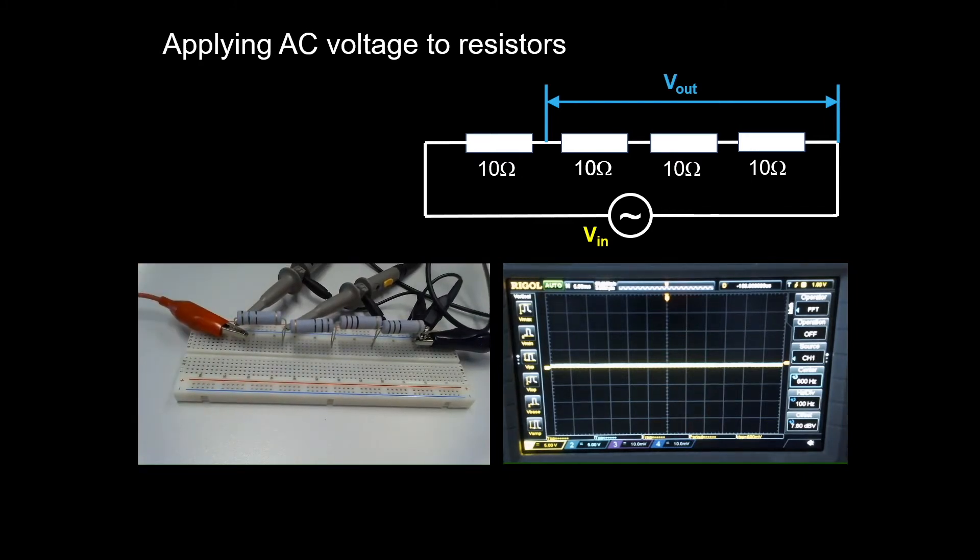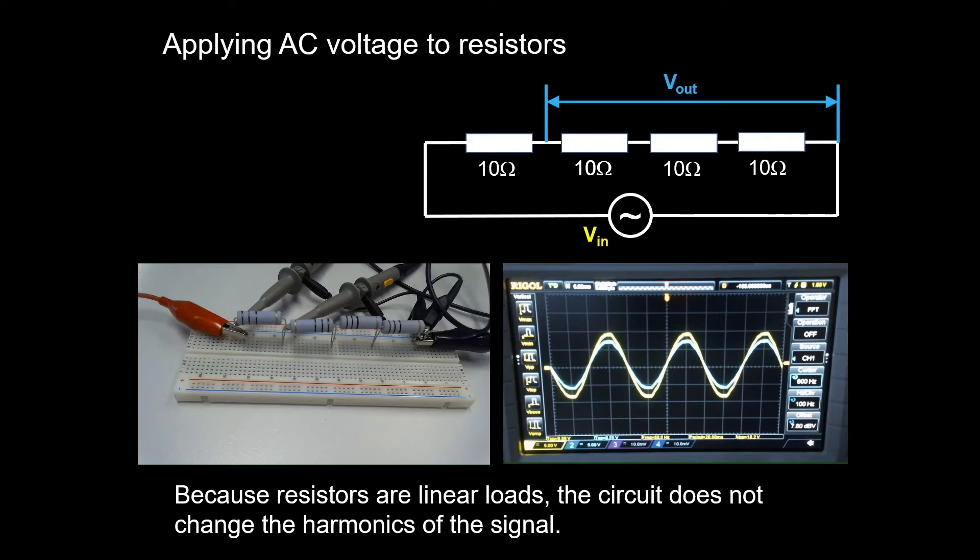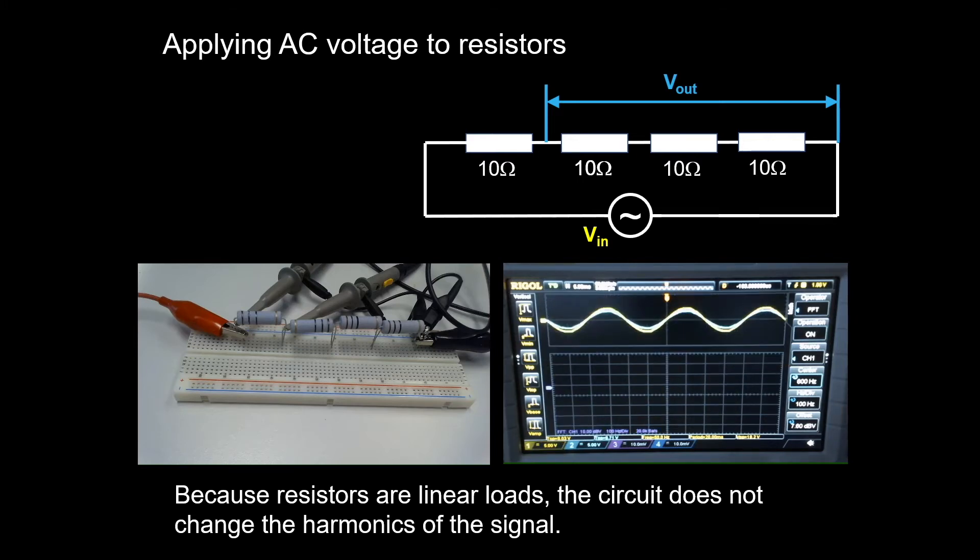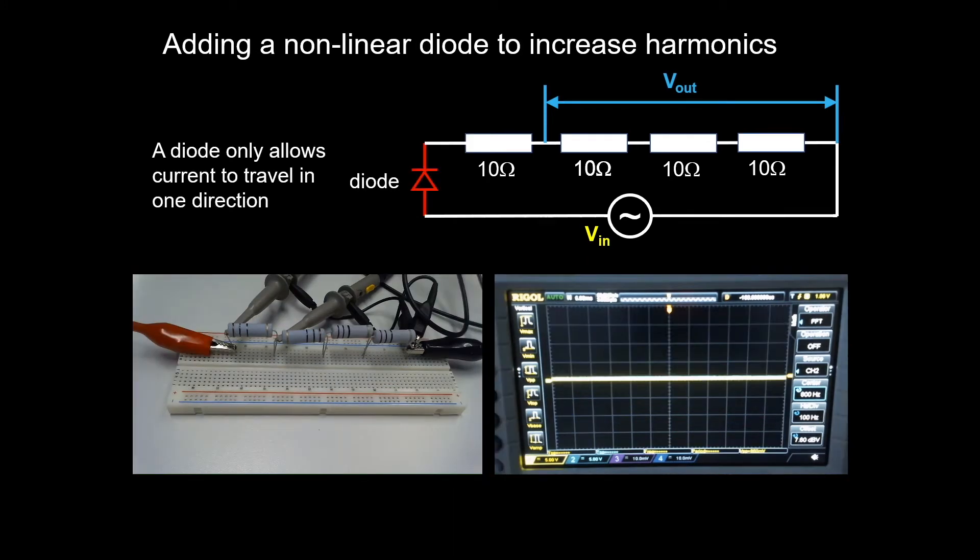When we turn on the power source, we will see that the input signal, the one in yellow, and the output signal, the one in blue, are in phase. Because the resistor is linear, it does not affect the harmonics. We can see it in the Fourier transform. This is the harmonics for the input signal. If we change to the output signal, you will see the same harmonics.